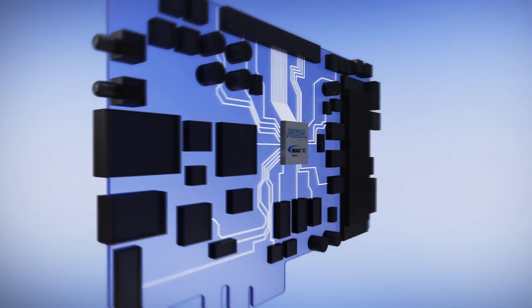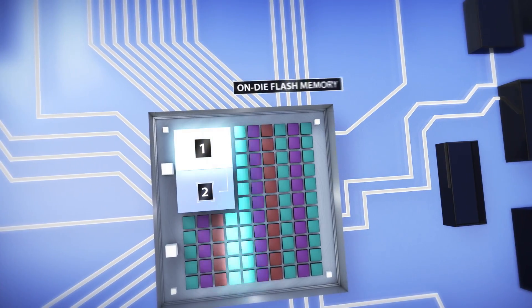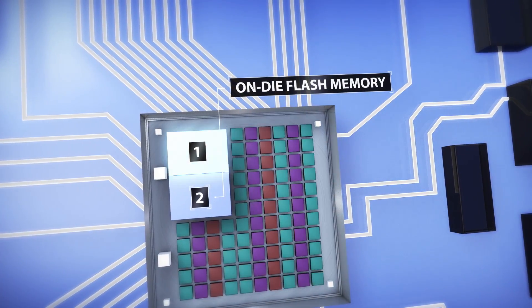For the first time, MAX 10 FPGAs give you a single on-die flash memory that can store both configuration images.